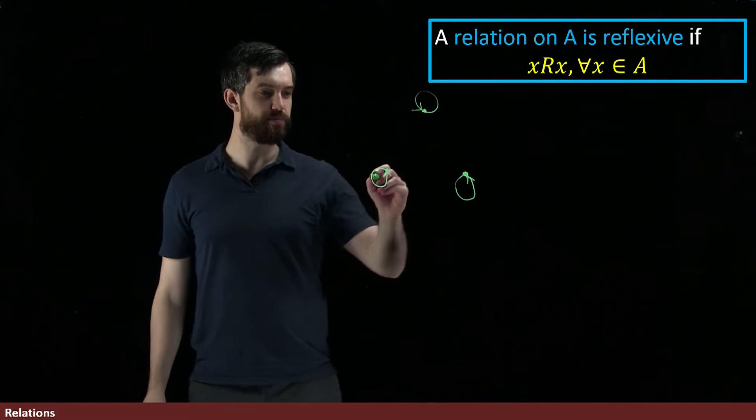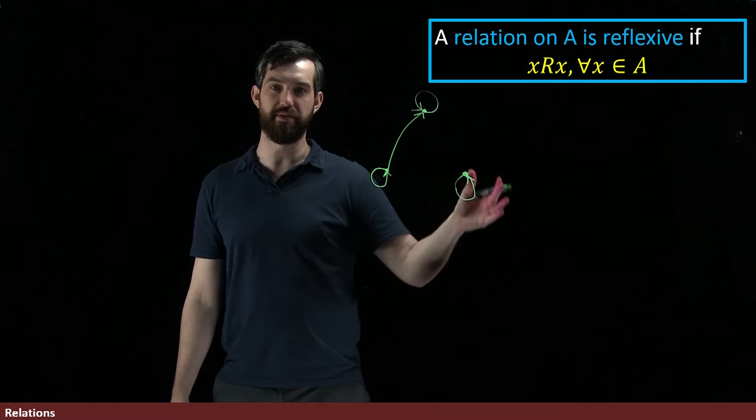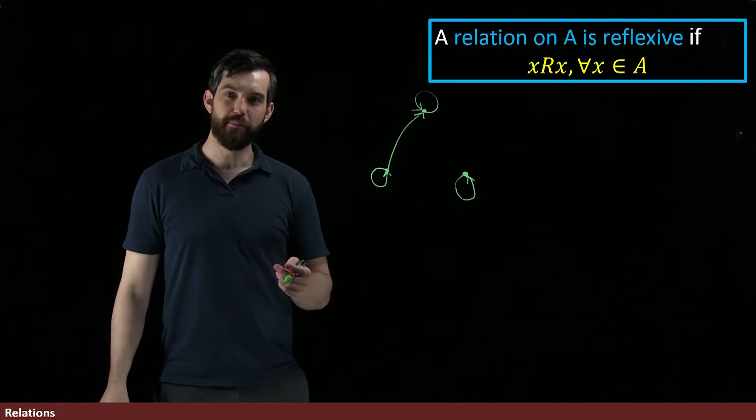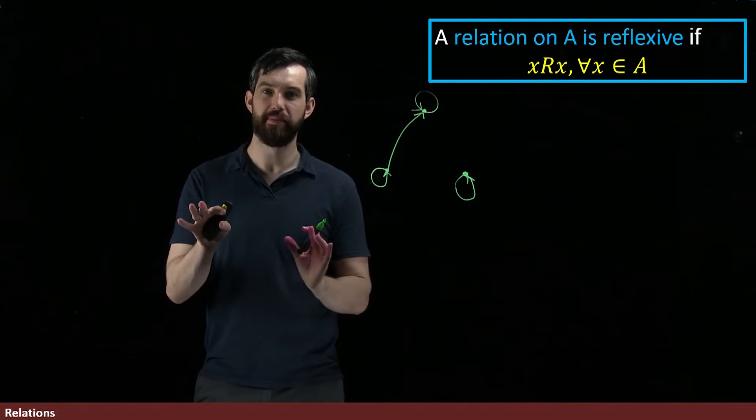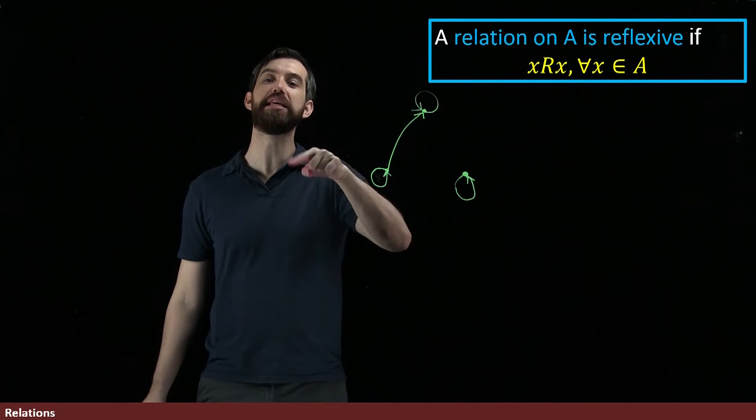Now it might be the case that there are other relations. Perhaps this particular one is related there, maybe there's more, maybe there's not. But the other connections don't matter. To be reflexive, all that matters is that every point has one of these little loops around it.